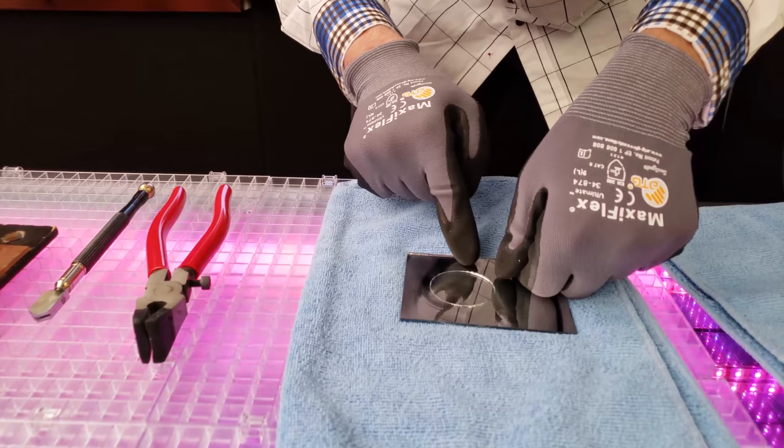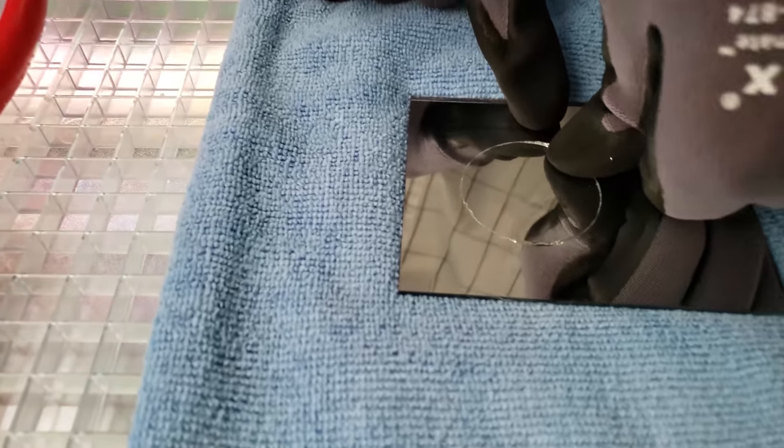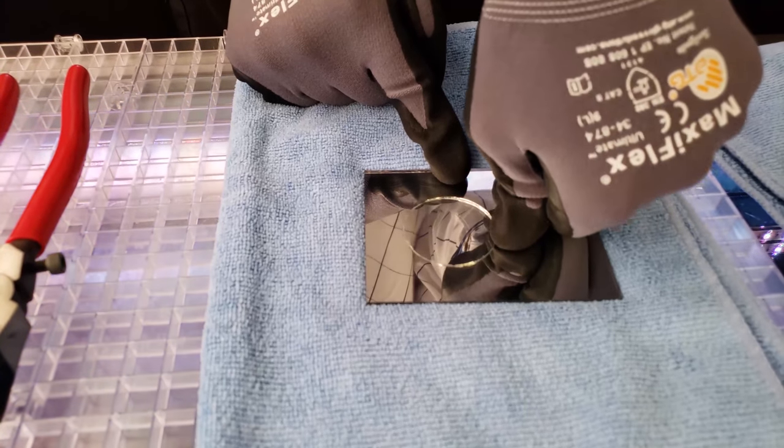Now you'll see the score line forming right there. It's breaking and you want to follow that line through the glass.